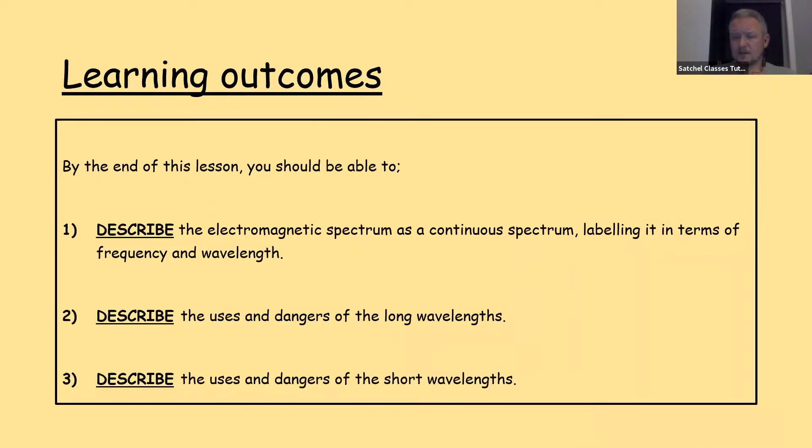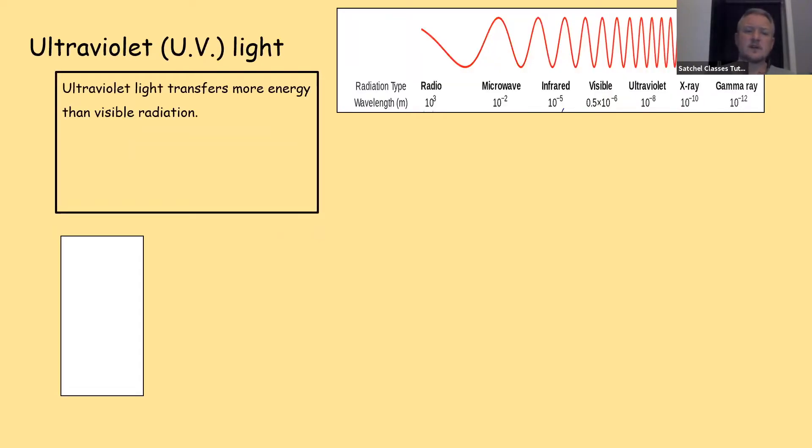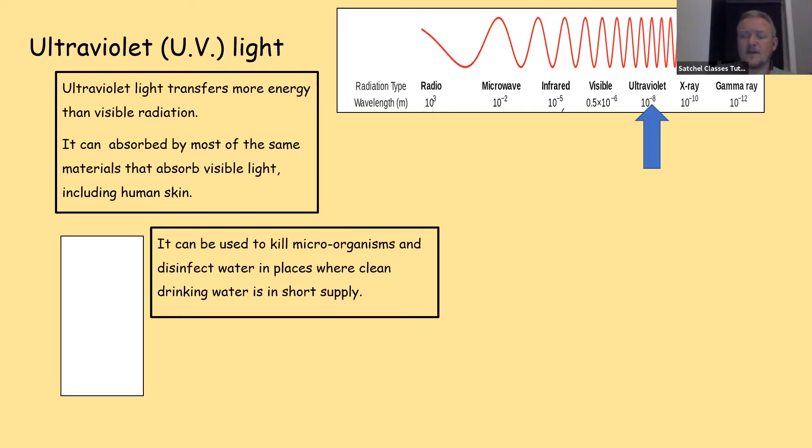So that's the uses and the dangers of the long wavelengths. Final part of the lesson: uses and dangers of the short wavelengths. Ultraviolet light transfers more energy than visible radiation. It can be absorbed by most of the same materials that absorb visible light including human skin. It can be used to kill microorganisms and disinfect water in places where clean water is in short supply. We basically fill plastic bottles with water that's been filtered down as much as possible to remove any debris, dirt, any contaminants that are visible to the naked eye but then we leave it on a silvered surface like a foil background in bright sunlight for a 24-hour period and the intense UV light will kill off any microorganisms that are left in the water.